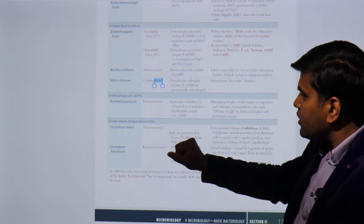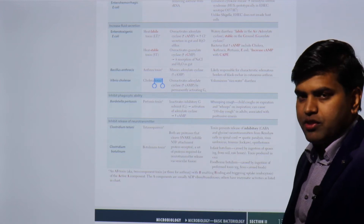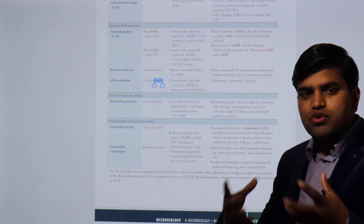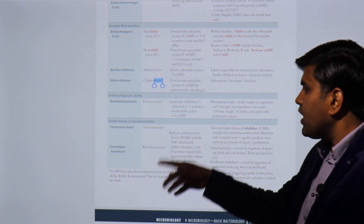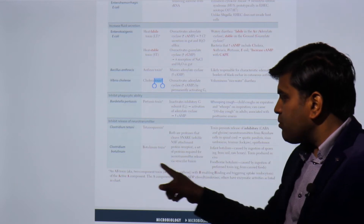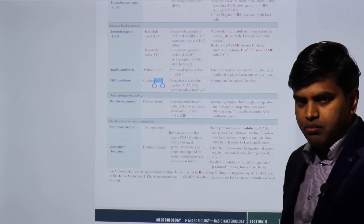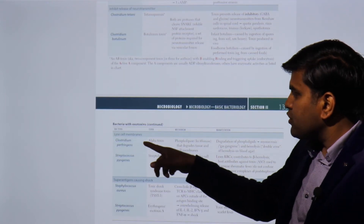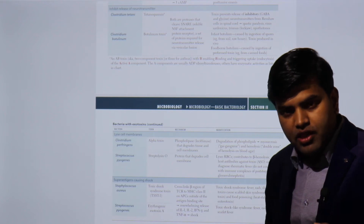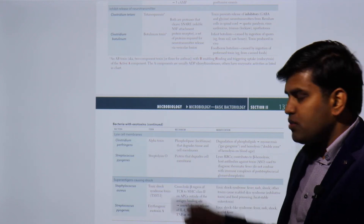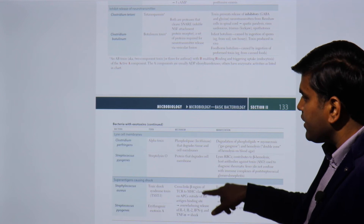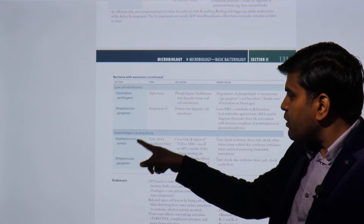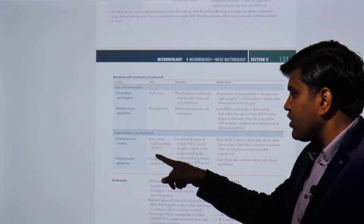Certain toxins inhibit the release of neurotransmitters — such as Clostridium tetani and Clostridium botulinum — going to the nervous system and blocking neurotransmitter release. There are also cytotoxins causing lysis of the cell membrane, like Clostridium perfringens and Streptococcus. Additionally, certain toxins act as superantigens causing shock, such as Staphylococcus and Streptococcus.